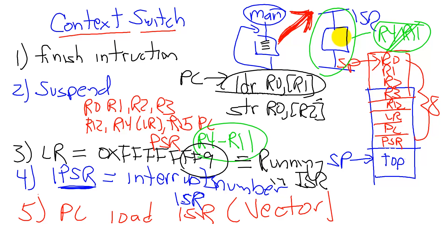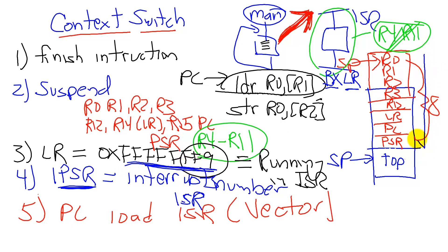Want to see how we get back? Right here at the end of the interrupt service routine is an instruction called BXLR, and that is to attempt to put the link register back into the program counter. But because the link register has this special number, instead of storing this in the program counter and jumping off into nowhere land, what it will do is pop these eight registers off of the stack, including the program counter. So this instruction will return back to where we interrupted from, bringing the program counter to the next instruction because that's what was saved on the stack.